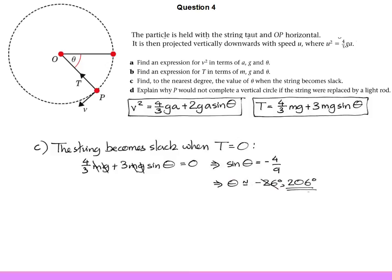Now, in a really nasty question, they could have turned this then into a projectile and asked you various questions about how long it takes before it hits the circle again, or what the maximum height of the particle was. In this question, they've been relatively nice to you. They've just asked you to explain why you couldn't actually go all the way around, even if it was a rod rather than the string.